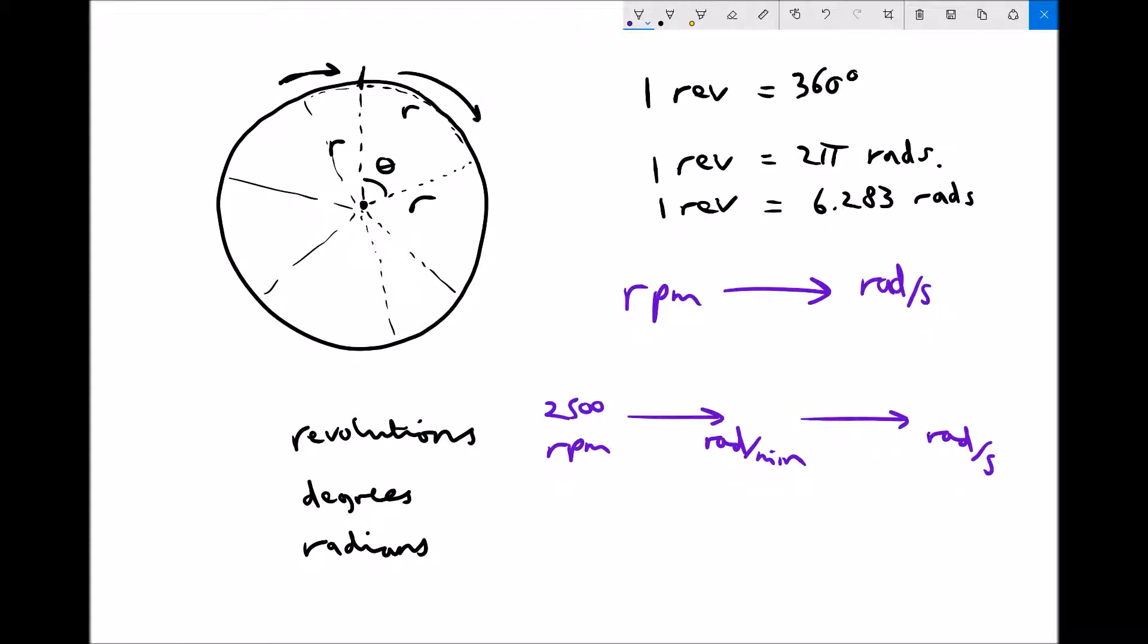The way we get from revolutions per minute to radians per minute is the same as the way we get from revolutions to radians. If something's travelling 2,500 revolutions every minute then we need to times that by 2π in order to find out how many radians it's turning per minute. Because one revolution is 2π radians, 2,500 times 2π gives us 15,708 radians per minute.